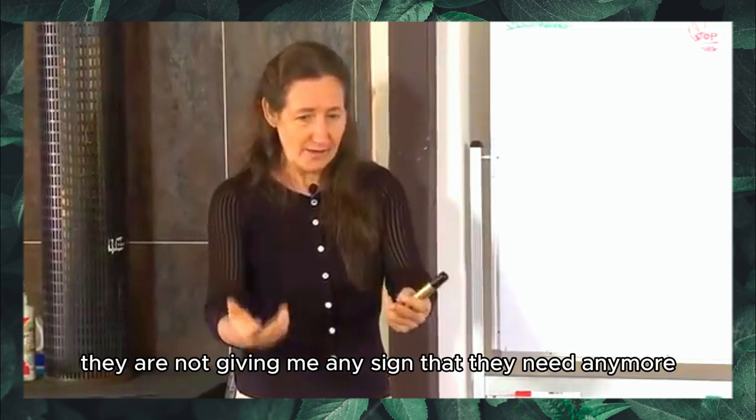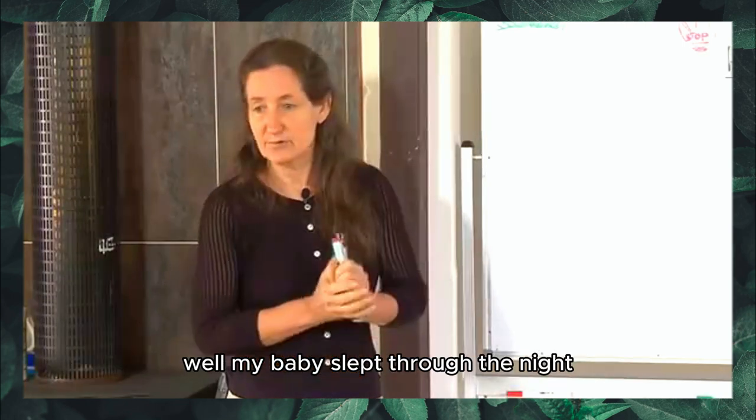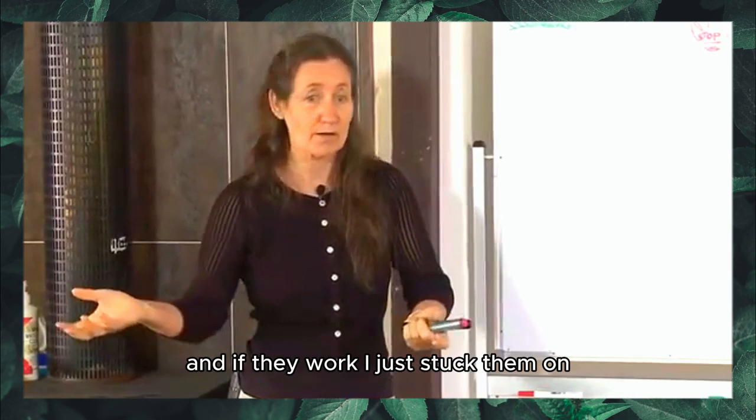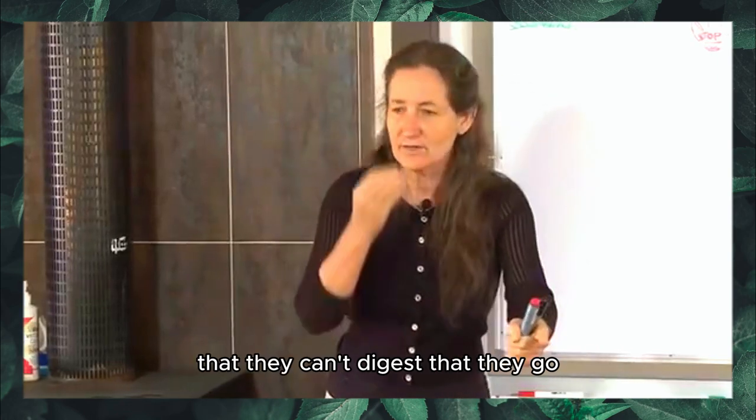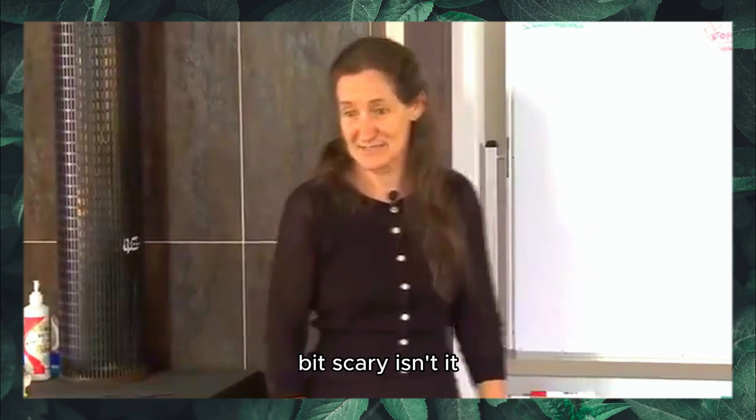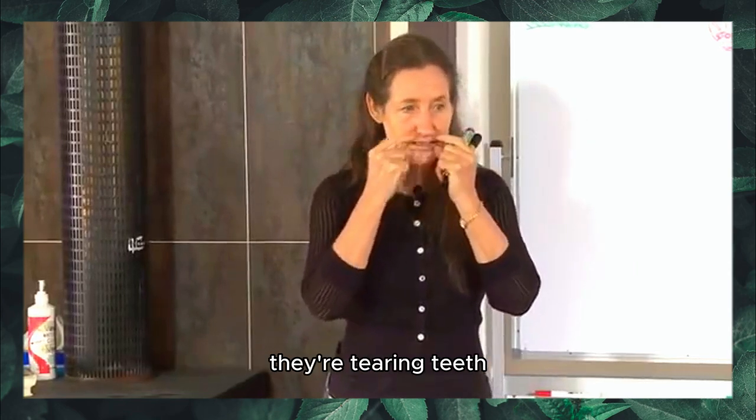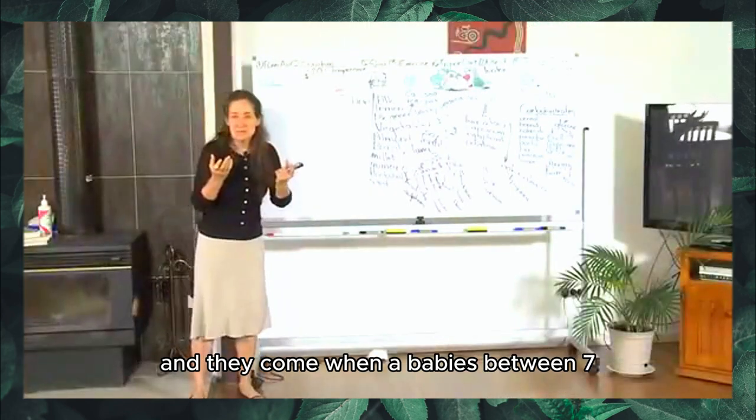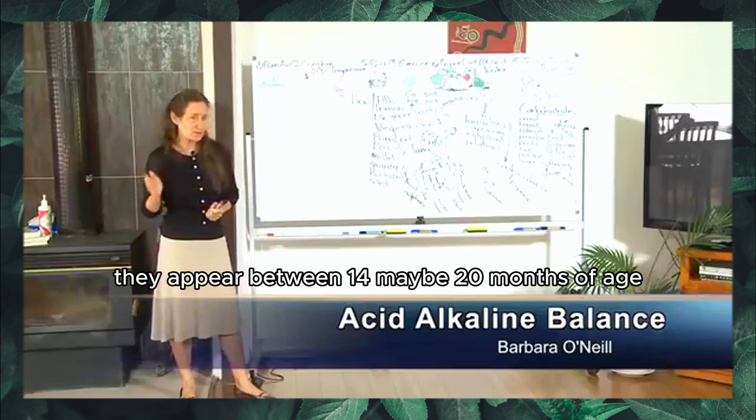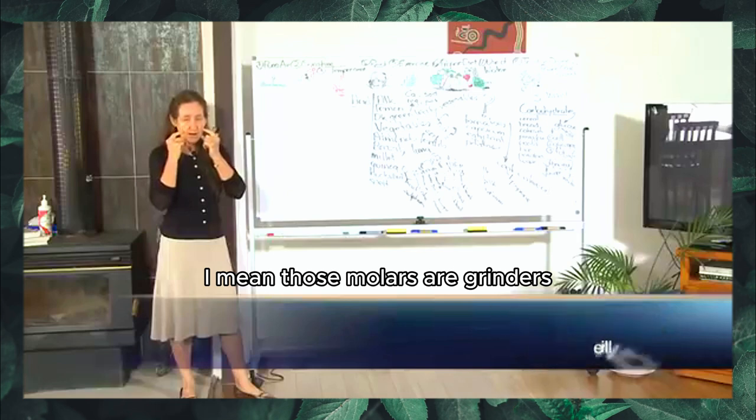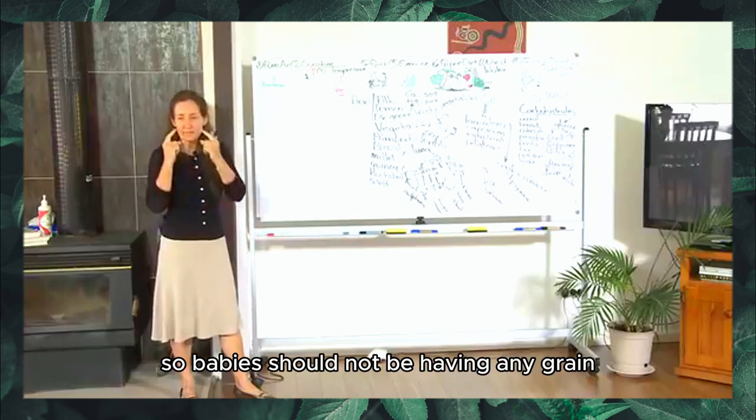The fact is that the first teeth are the four up the top and the four down the bottom. They're tearing teeth. They come when a baby's between seven, nine, ten months of age. The next teeth are the molars. The molars come through and they appear between 14, maybe 20 months of age. Those molars are grinders. And what do you grind? You grind the grain. So babies should not be having any grain till those molars are there. And science shows us that when those molars appear, something is started to be released in the mouth called Tylin. Tylin breaks down starch.